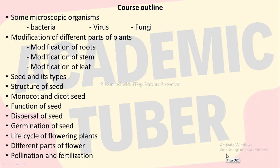Here in this unit, we are going to discuss some microscopic organisms — bacteria, virus, fungi. After that, we are going to discuss modification of different parts of plants, seed and its types, structure of seed, monocot and dicot seed, function of seed, dispersal of seed, germination of seed, life cycle of flowering plants, different parts of flower, and pollination and fertilization.